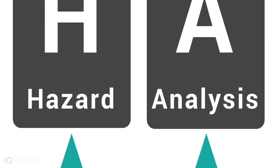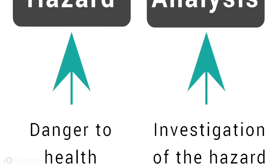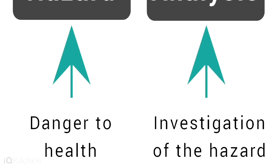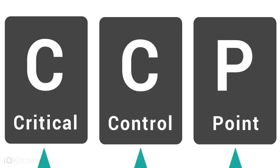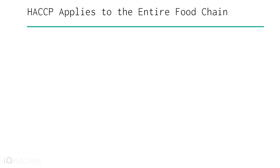A hazard analysis is a science-based and systematic process to identify possible dangers to health. A critical control point is a point, step, or procedure at which control can be applied and a food safety hazard can be prevented, eliminated, or reduced to acceptable levels.